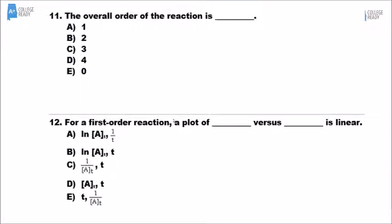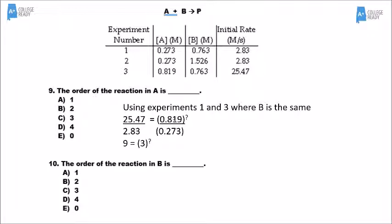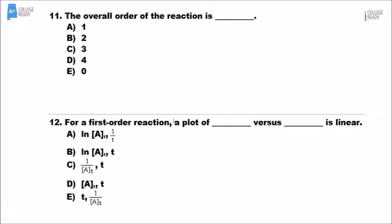For number 11, it wants to know the overall order — that's easy. It was second order with respect to A and zeroth order with respect to B. Therefore, the correct answer is 2.